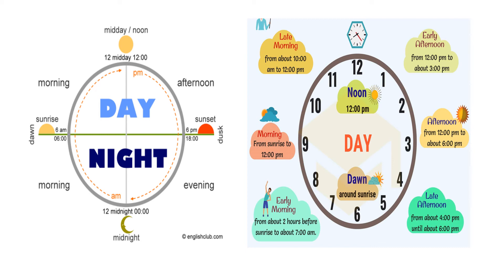So, the sunrise of the day is called dawn and the sunset, that means 6 pm, is called dusk. 12 pm is known as midday or noon, and 12 am is known as midnight.